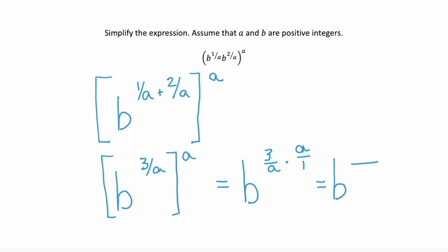The numerator is 3 times a, and the denominator is a. Notice that this fractional exponent, the numerator and the denominator have a in common, so those would simplify to just 1, which means this simplifies to b to the power of 3.